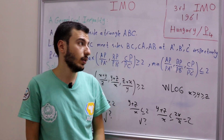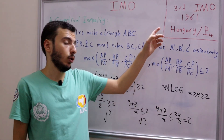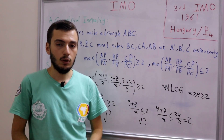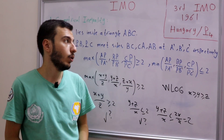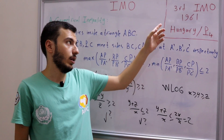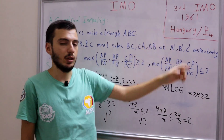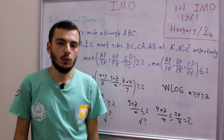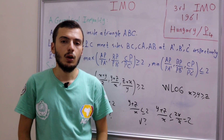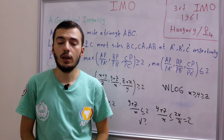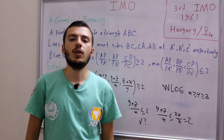That was it for IMO 1961 problems 1 and 4. In the next video we'll be discussing the fourth IMO, which is 1962, starting with problem 1. If you enjoyed this video, please like, share, and subscribe to the channel. See you in the next video!